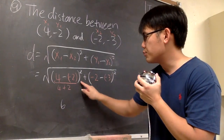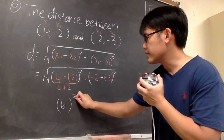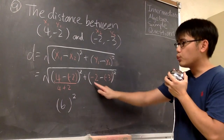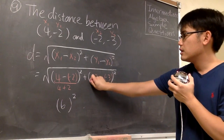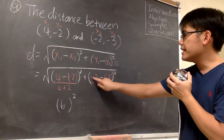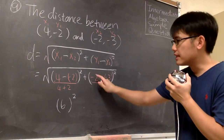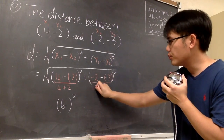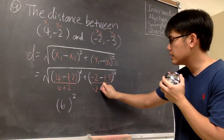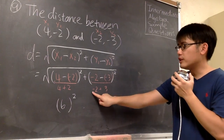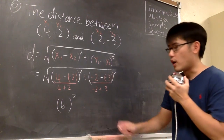We still have this parentheses raised to the second power. Then we work out negative 2 minus negative 3, which is the same as negative 2 plus 3. And we know negative 2 plus 3 will give us 1.